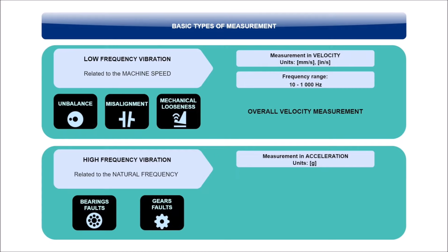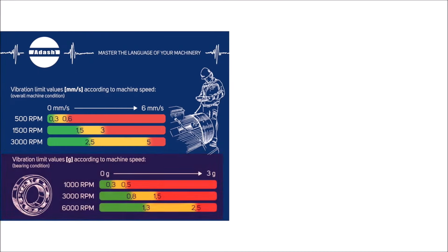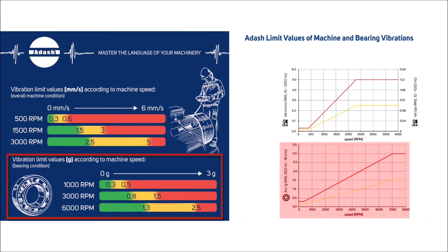But let's keep it simple, and define your measurement of acceleration in the range of 500 to 16,000 Hz. ADASH has defined bearing vibration limits related to the speed of the machine again. The mentioned frequency range of 500 to 16,000 Hz has been applied.